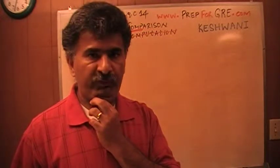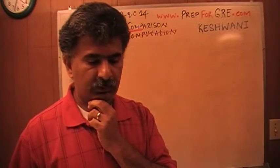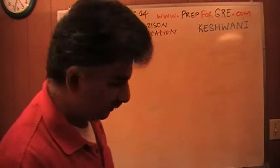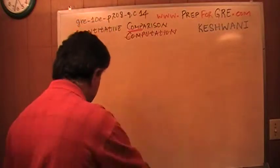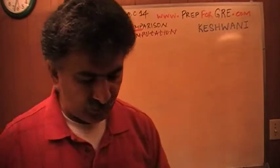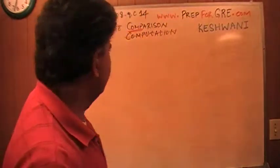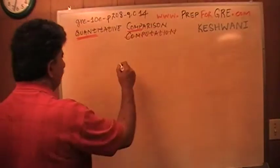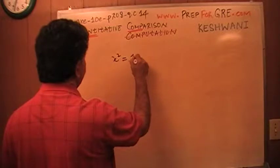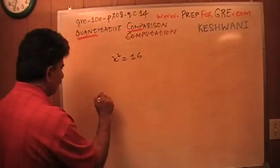Four-fifths of the people who took the exam got it wrong. Only 19% got it right. Let's see what is so special about it. Before I actually do the problem given to us, let's look at something different. I am told that X squared equals 16, and I want you to compare these two quantities.